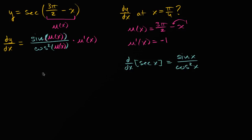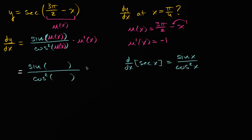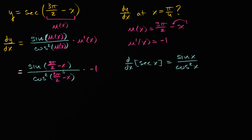That's the derivative of secant with respect to u of x, and then the chain rule tells us it's going to be that times u prime of x. Substituting back, this is going to be sine of u of x — which is three pi over two minus x — over cosine squared of three pi over two minus x, times u prime of x. We already figured out u prime of x is negative one, so I could write times negative one.